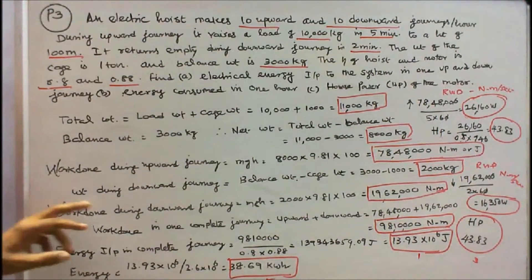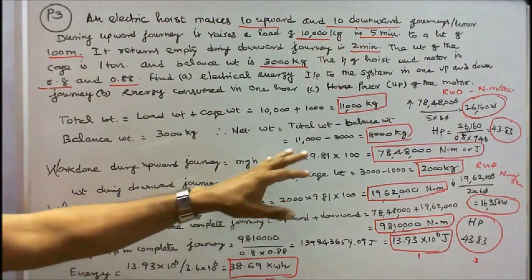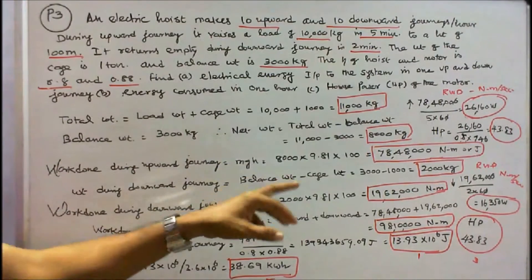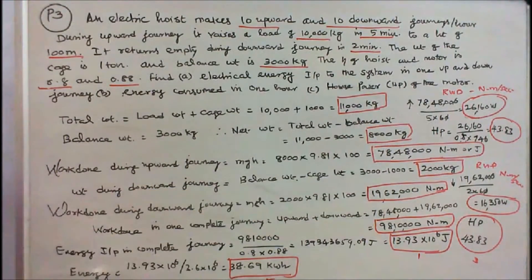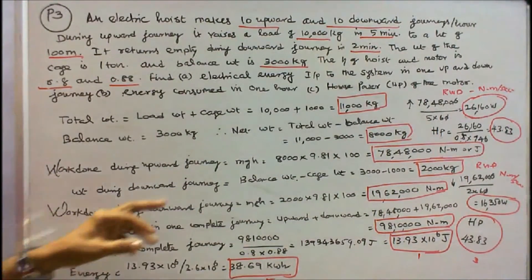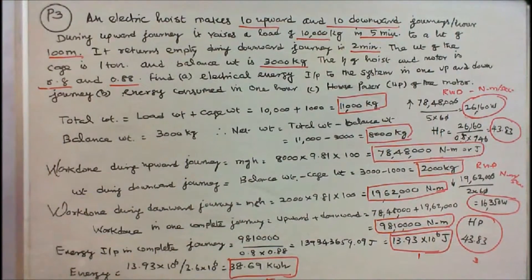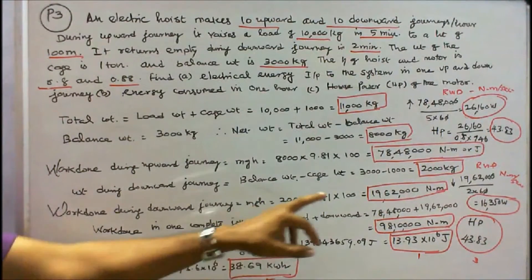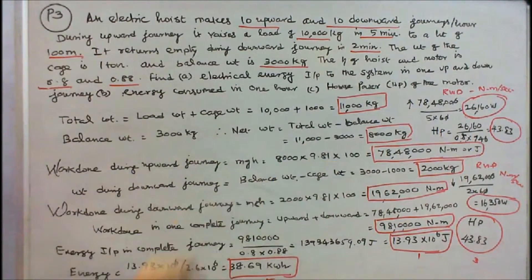Weight during downward journey is equal to balance weight minus cage weight: 3000 minus 1000, that is equal to 2000 kg. Work done during downward journey is equal to M into G into H: M is 2000, G is 9.81, H is 100, that is equal to 19,62,000 Nm.